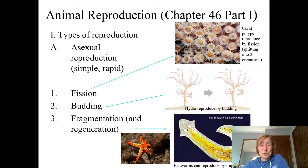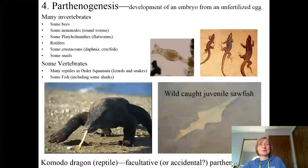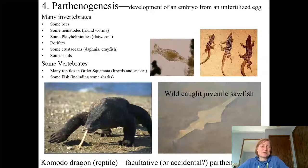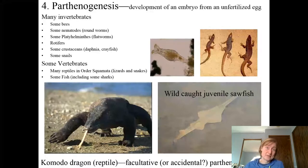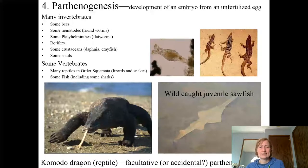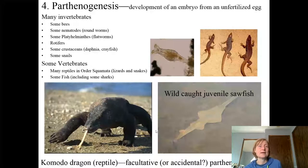Some organisms reproduce asexually. There's one more version of asexual reproduction, which is funky, and we want to talk about it briefly. It's called parthenogenesis. Parthenogenesis is sometimes called virgin birth. It's also defined as the development of an embryo from an unfertilized egg. Many of these organisms actually reproduce sexually sometimes, and sometimes they reproduce with this asexual mechanism called parthenogenesis. We would call these individuals facultative parthenogens — animals that can do parthenogenesis when they have to.